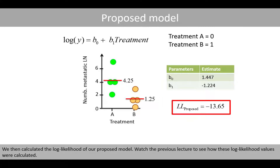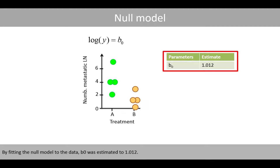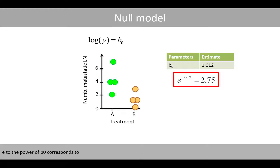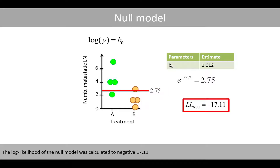We then calculated the log likelihood of our proposed model. Watch the previous lecture to see how these log likelihood values were calculated. Then we did the same calculations for the null model, which is a model including just an intercept. By fitting the null model to the data, B0 was estimated to 1.012. E to the power of B0 corresponds to the average count based on all data, so the null model represents a model with a single mean. The log likelihood of the null model was calculated to negative 17.11.